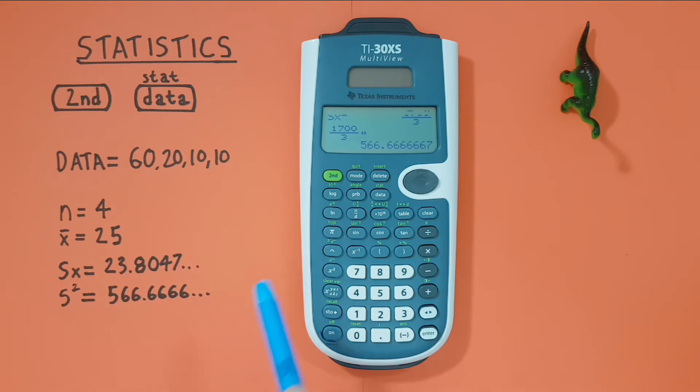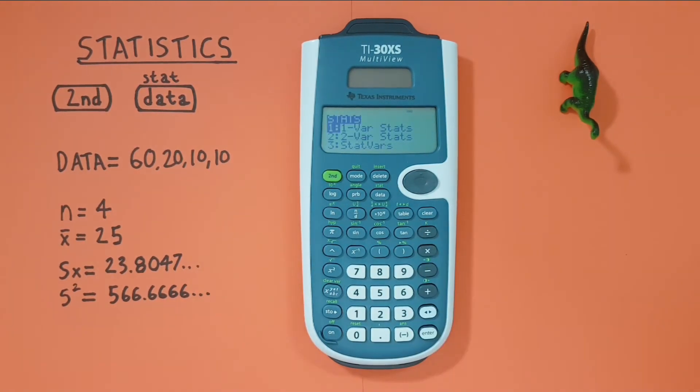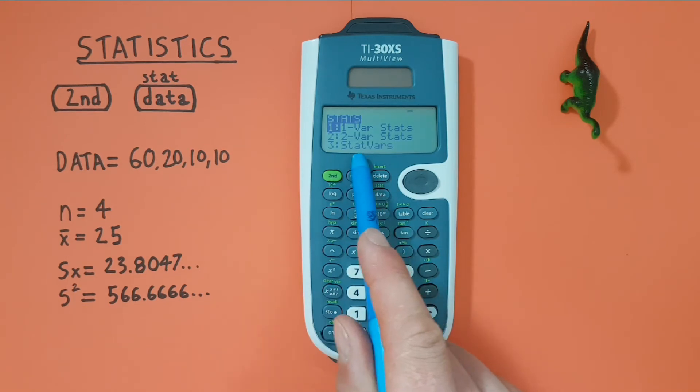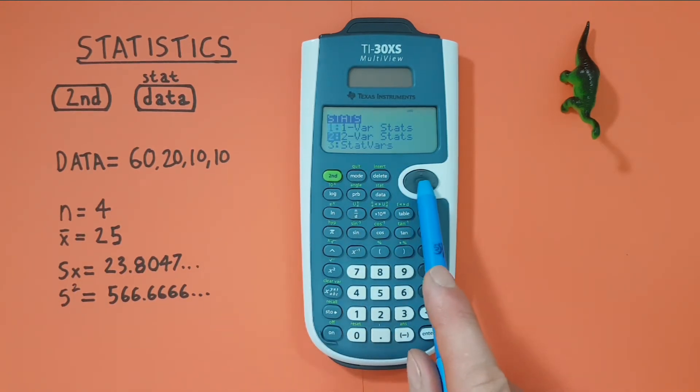If we want to go back to our statistics, we go second data again. We now see we have a third option in this menu, stat vars, which allows us to quickly return to our stats. So we can either scroll down or press 3.